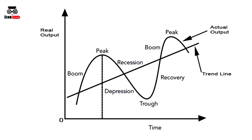During the time period from trough to peak, the opposite of the above features can be seen. Real output or GDP will increase, an inflationary impact can be seen, and the employment level gradually increases.